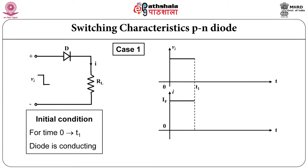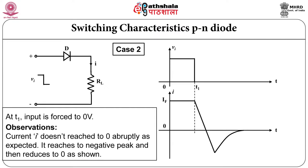If you see the diagram, let us consider diode is on and current is flowing through the diode. Let us assume that current is I_f. At certain instant t equals t1 diode is switched off by making input 0. For time t0 to t1 diode is conducting. At t1 input is forced to 0. It is evident from the timing waveform that the current I does not reach to 0 abruptly as expected — it reaches to a negative peak and then reduces to 0.